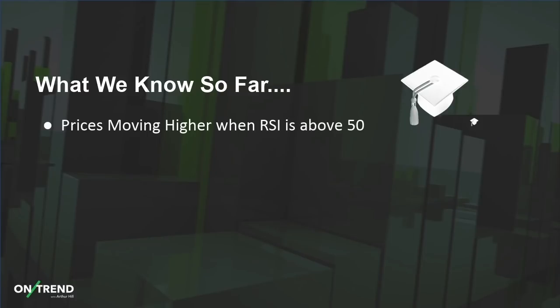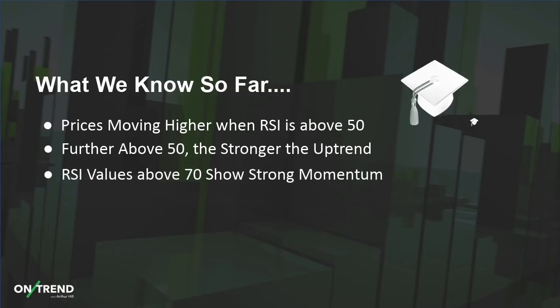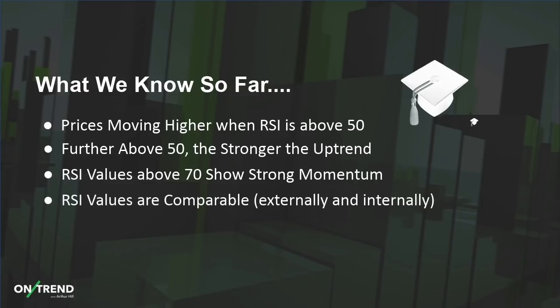So what do we know so far? Prices are generally moving higher when RSI is above 50, and the further above 50 RSI is, the stronger the uptrend. Furthermore, RSI values above 70 are relatively rare — and when you get above 70, that is showing strong momentum, which is something we want to pay attention to. And RSI values are comparable both internally and externally, so we can compare RSI values across a timeframe for a particular stock, or compare RSI values from one stock to another.